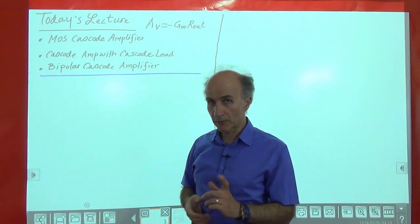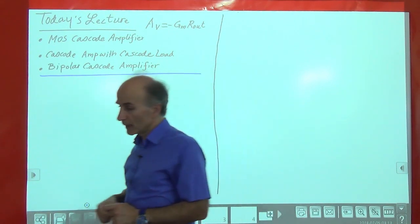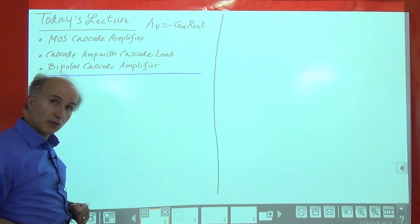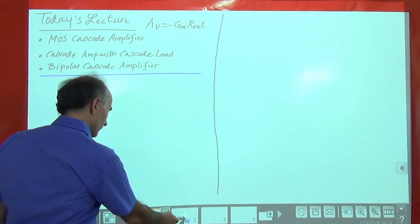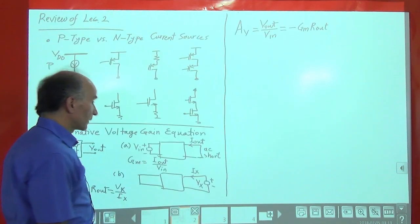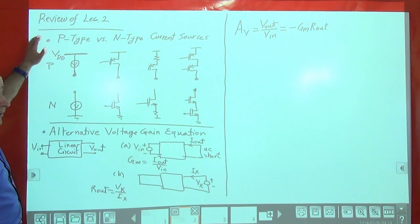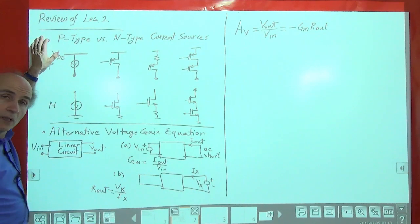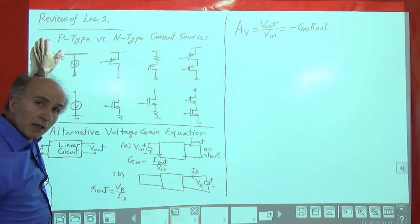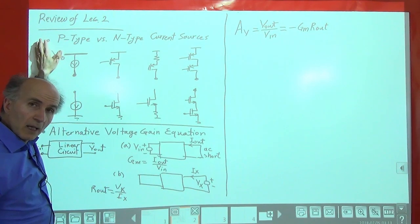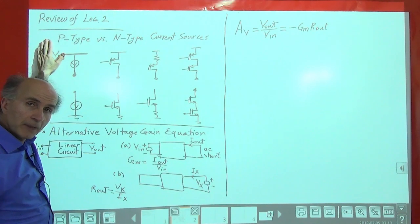Before we go there, let's review what we learned in lecture number 2. In lecture number 2, we followed two main topics. One was the p-type cascode current source versus the n-type.